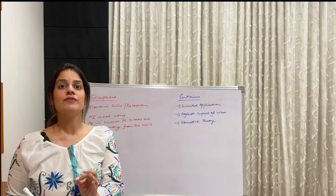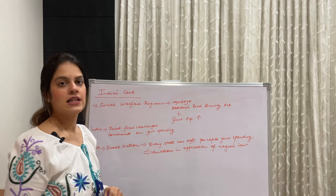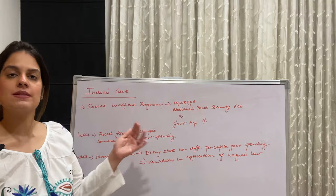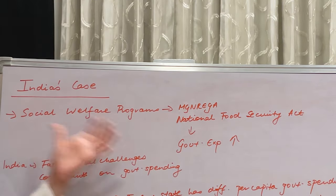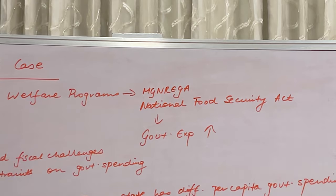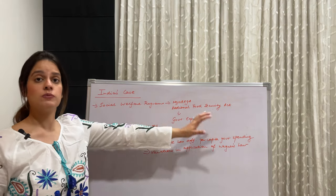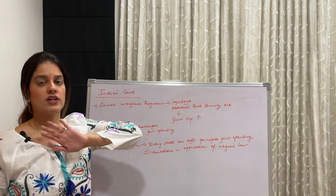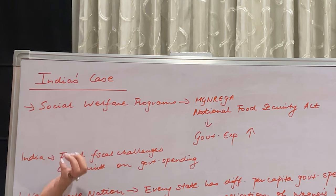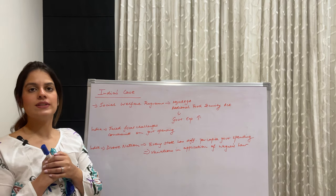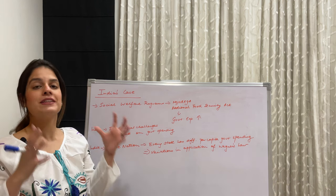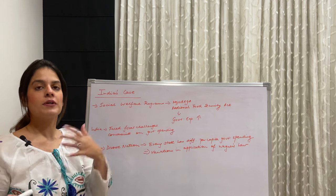Now let's look at India's scenario in relation to Wagner's Law. India has implemented various social welfare programs — MNREGA is one of the most famous, along with the National Food Security Act and many others. Due to these programs, government expenditure has risen significantly. However, India has also faced fiscal challenges, because it's easier said than done — as national income rises, government expenditure rises, but there are real constraints.